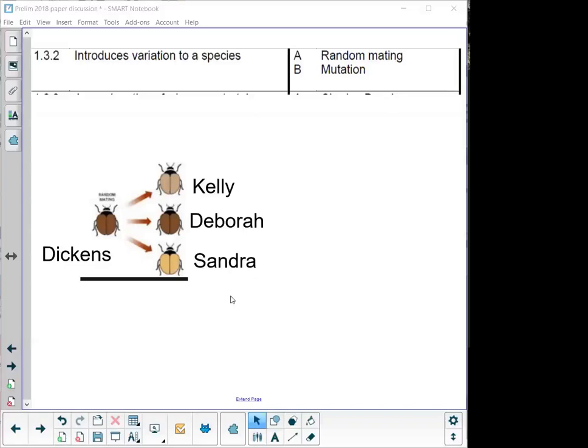Now in case of humans it's not quite as random as that but the idea about random mating is that if this beetle was coming across these three other beetles then he could have mated with any one of those and each of them have different genes but he did go with Debra and so he ends up with a specific gene. So that's random mating he could have chose any of them but he chose Debra so we came across Debra and so that's how it ended up being that the genes between Debra and Deakins not between Deakins and Kelly and not between Deakins and Sandra.